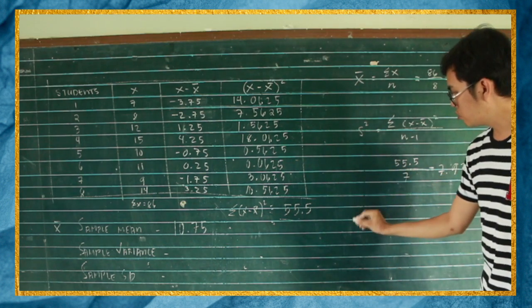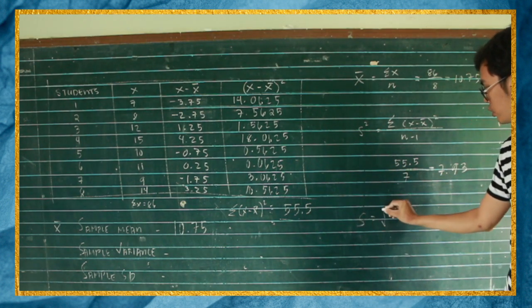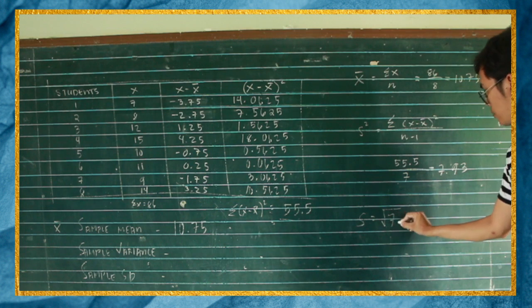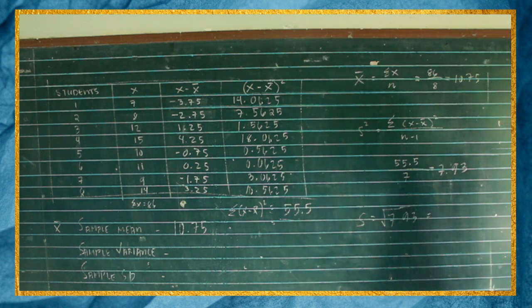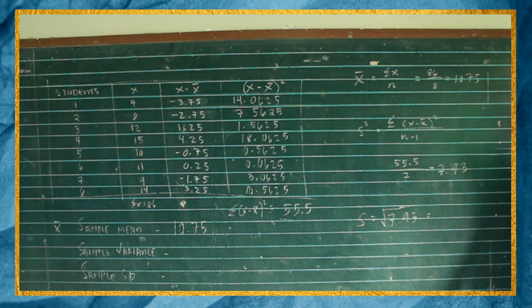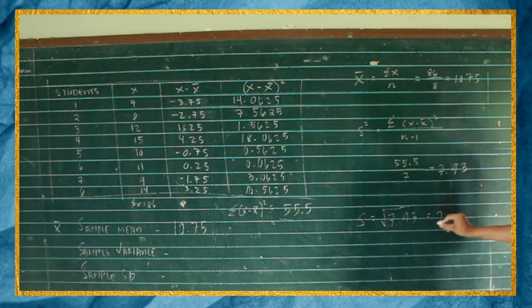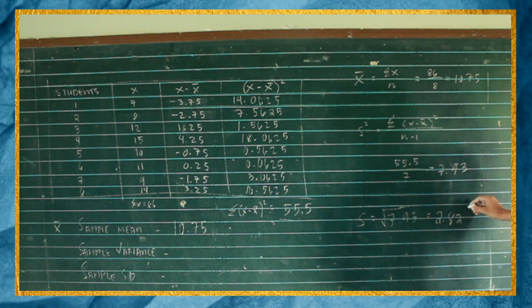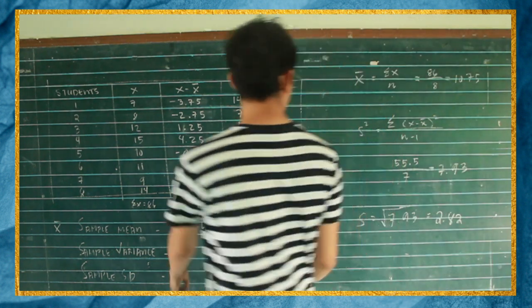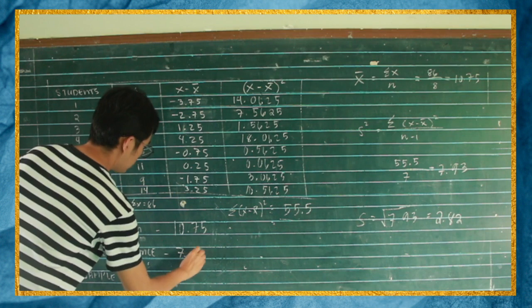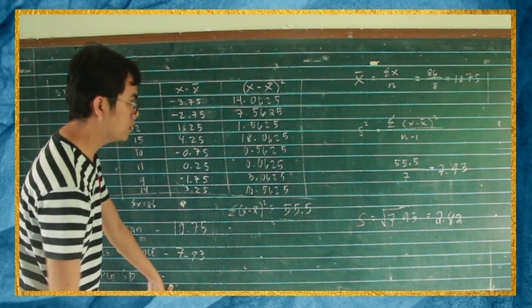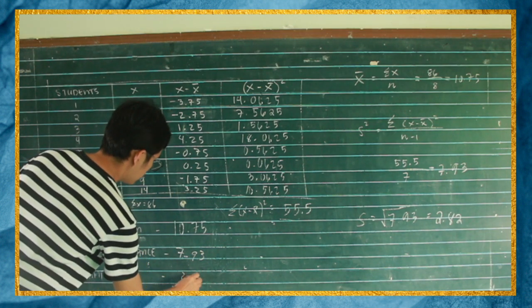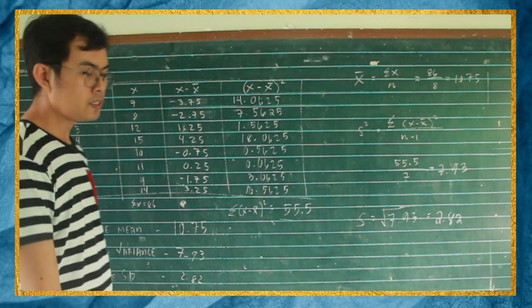And then para makuha naman yung standard deviation, kunin mo yung square root ng variance which is 7.93. So the answer is 2.82. So sample variance 7.93, sample standard deviation 2.82.